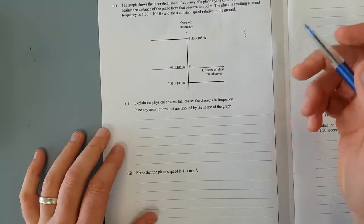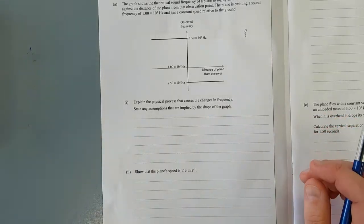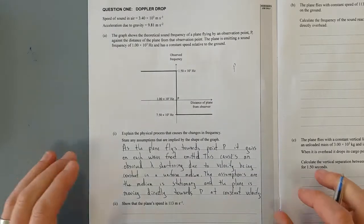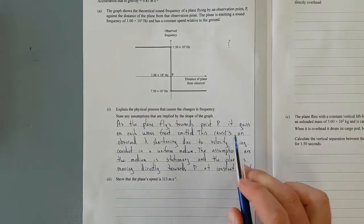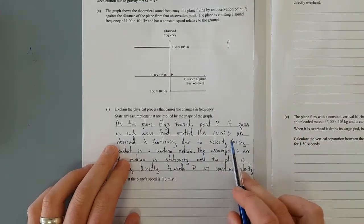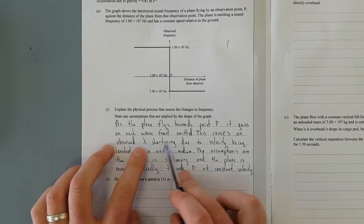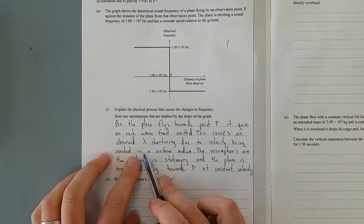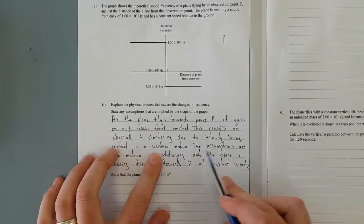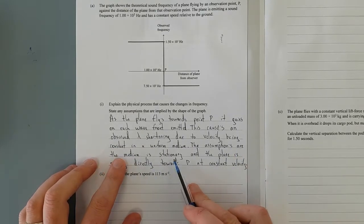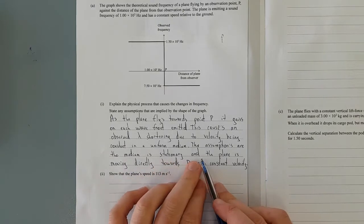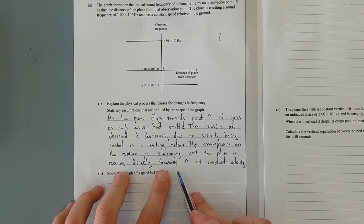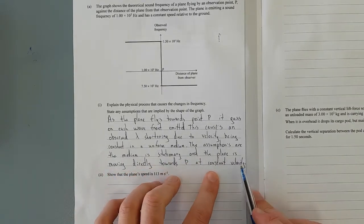So I'm going to pause the video, write out this answer and then discuss. What I've said is, as the plane flies towards point P, it gains on each wave front emitted. This causes an observed wavelength shortening due to the velocity being constant and a uniform medium. The assumptions are the medium is stationary, obviously no wind, otherwise it'll blow the sound wave left or right.